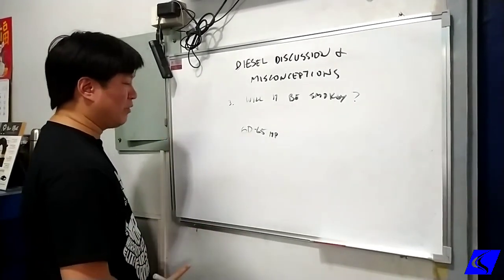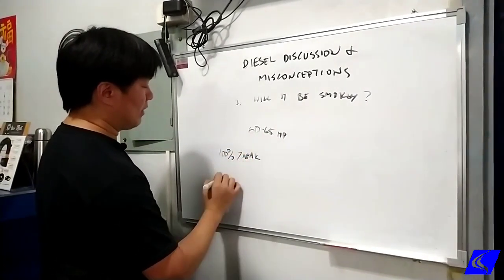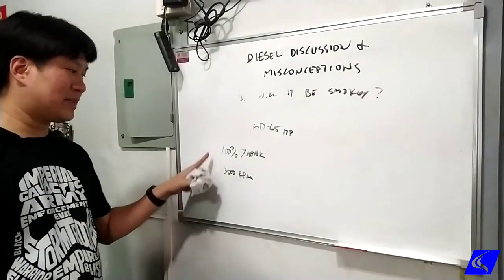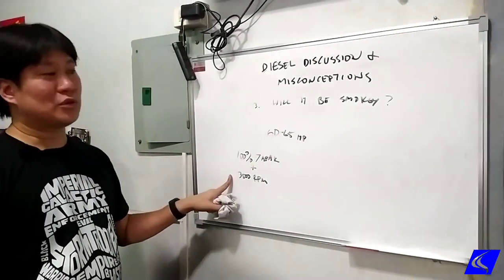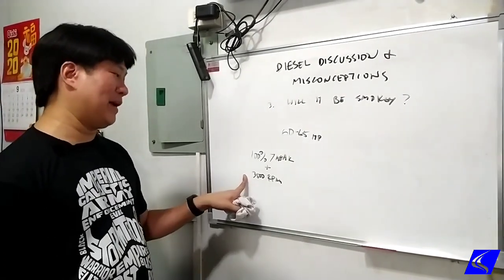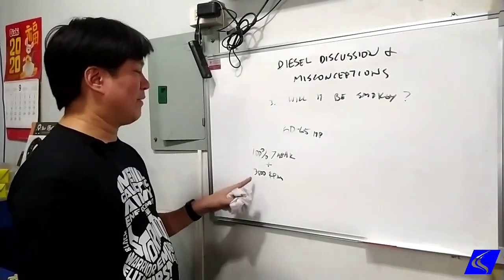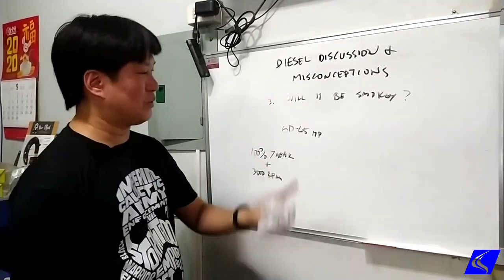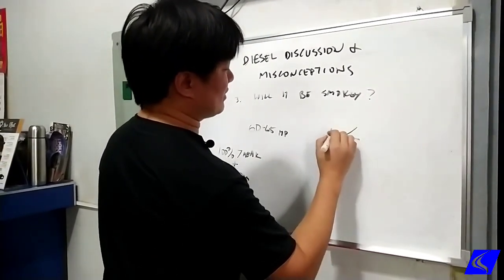Let's take our Montero example. We know that an additional 60 to 65 horses more will still not be smoky, minimal smoke, very very minimal smoke. And that smoke will only happen at 100% throttle and at 3500 RPM. Anytime these two conditions are not met, hindi siya mausok. So if you're only cruising at 1500, 1800, 2000 RPM and 30% throttle, hindi siya mausok.